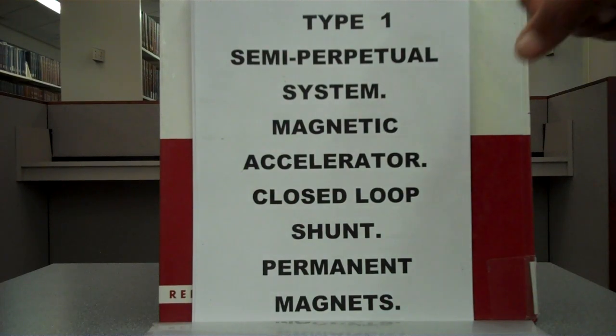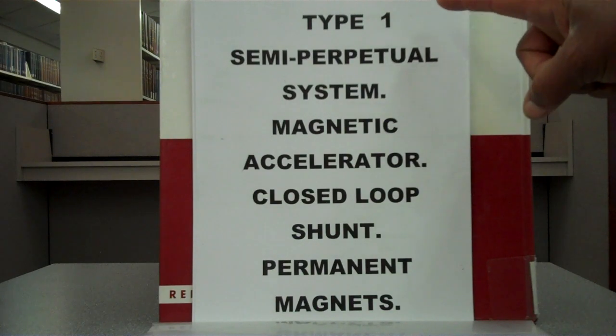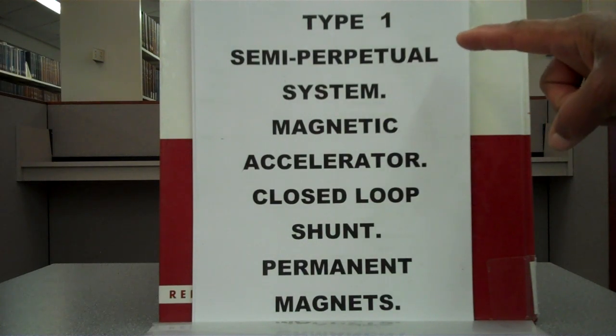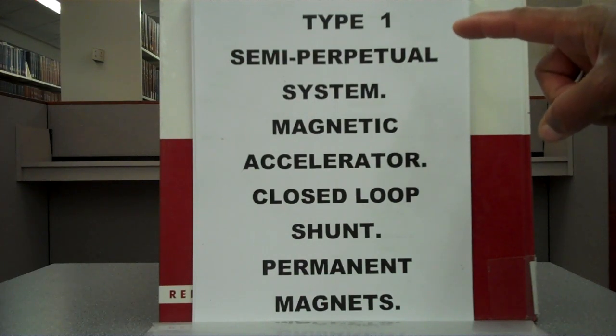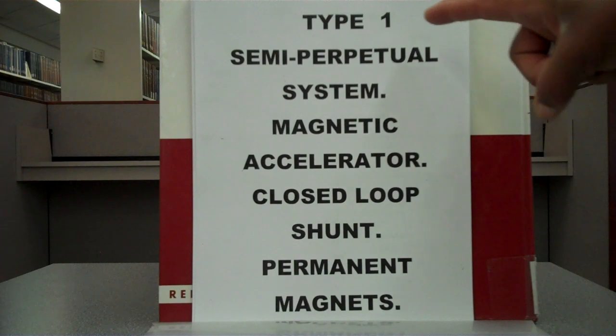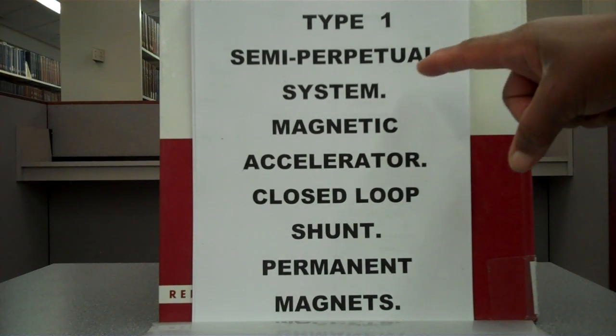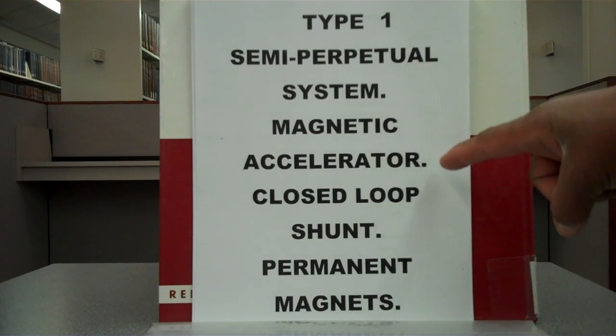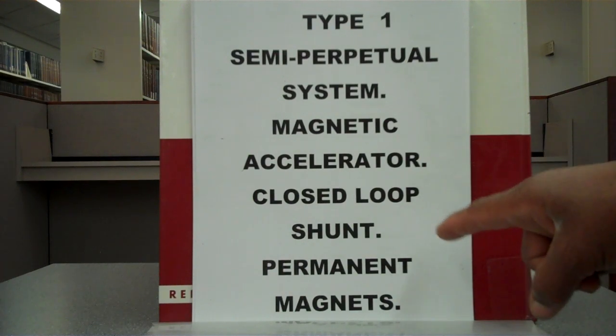Type 1 is being illustrated first. I made another video - please go watch that video for Type 1 in detail. It is a Type 1 Semi-Perpetual System Magnetic Accelerator, Closed Loop Shunt, using permanent magnets.